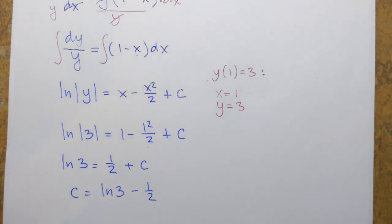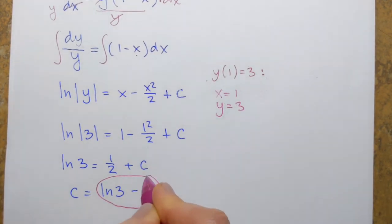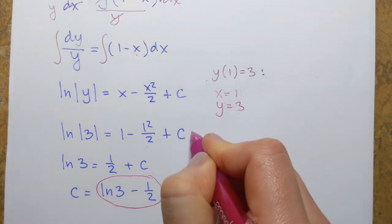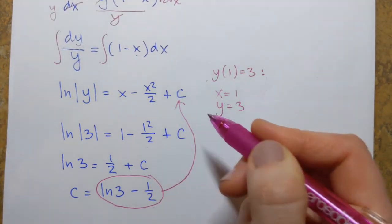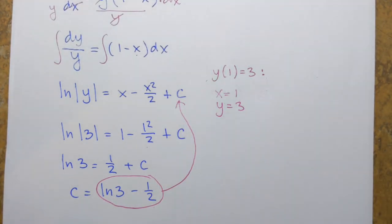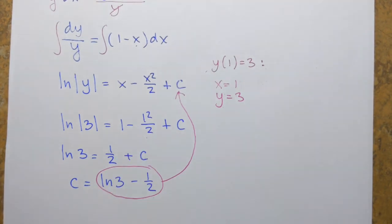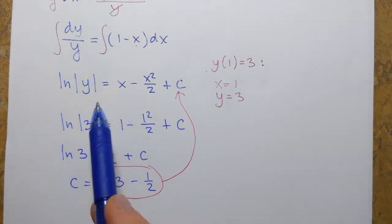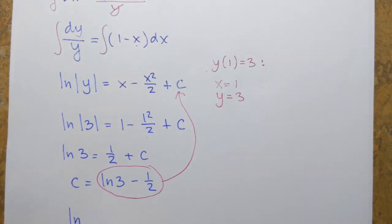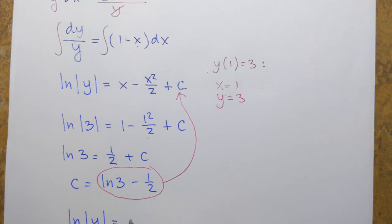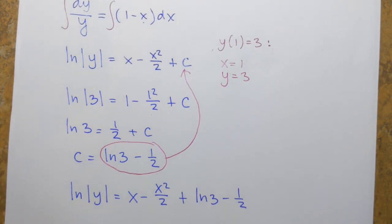So that's the constant that I have to use to obtain a function and I'm gonna plug that in here to obtain a function that satisfies the initial condition. It's gonna be one of the functions from that family of functions. So ln of absolute value of y equals x minus x squared over 2 plus ln of 3 minus 1 over 2. So solution to the initial value problem...